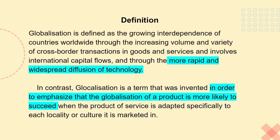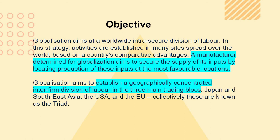Globalization aims at the worldwide intra-sector division of labor. In this strategy, activities are established in many sites spread over the world based on the country's comparative advantages. A manufacturer determined for globalization aims to secure the supply of its inputs by locating production at the most favorable location. Labor-intensive production of components will be situated in low-wage areas, while high-tech and high-value-added products will require a skilled or well-educated workforce. In a European context, this would mean locating research facilities in core areas and assembly plants in outer areas.